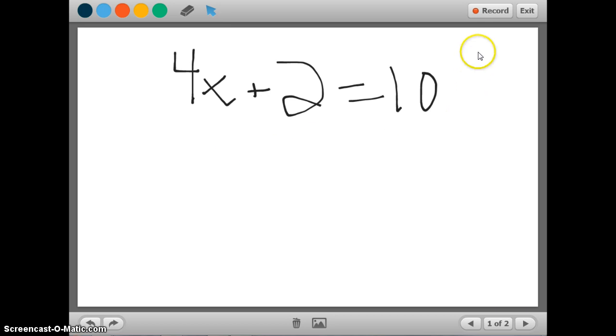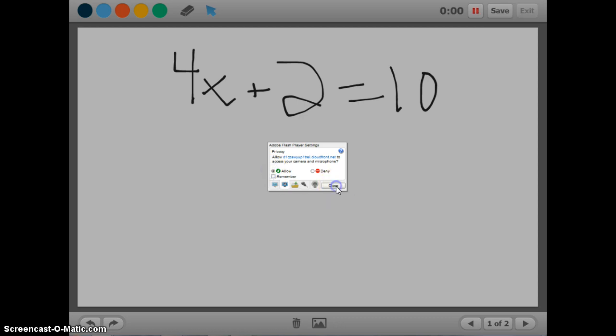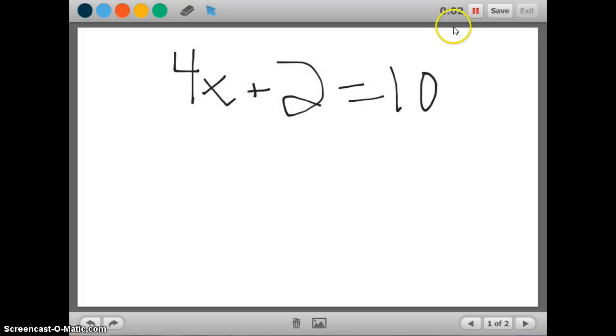If I want to make a video of how to solve this equation, I would just click record and allow it to record. And then, as you can see, the timer is running so it's recording my voice and my movement. And I would just go through and explain the process. Our first step would be subtract 2 from each side. When we do that, we'd be left with 4x is equal to 8. And then, we'd divide both sides by 4, as we did earlier, to receive our answer of x equals 2.